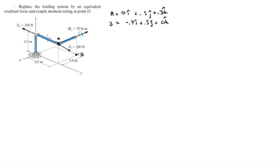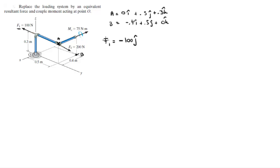First we're going to find the Cartesian vector form of all the forces. F1, which has a magnitude of 100, is going in the negative y direction, so it's simply -100j.